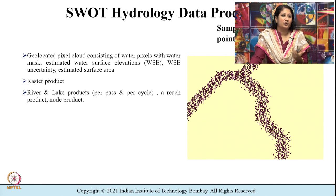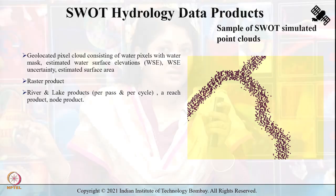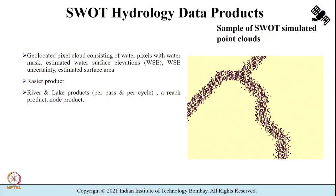The other kinds of products you get are raster-based products, obtained by aggregating the pixel cloud, river reach products, and node products. Node products refer to a point or node located at every 200 meters along the river centerline, consisting of averaged height and width over that section of the river centered at the node.